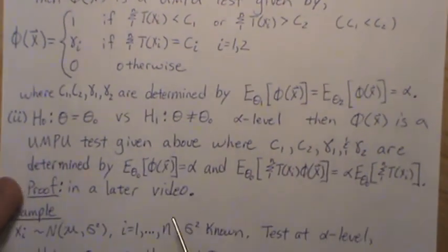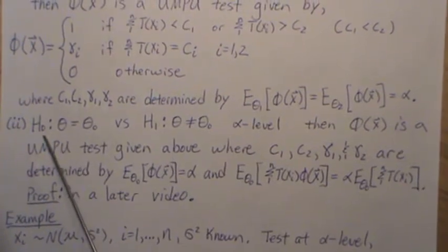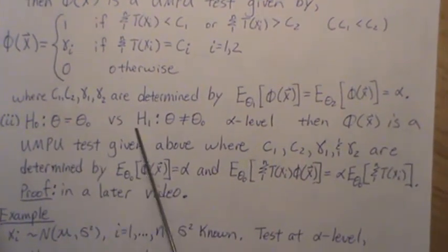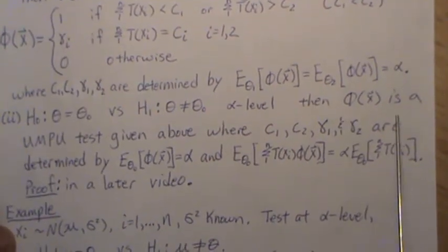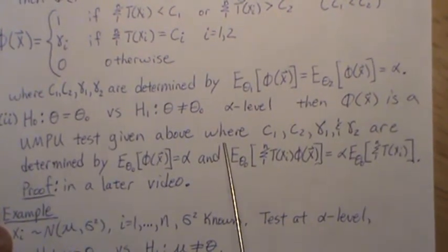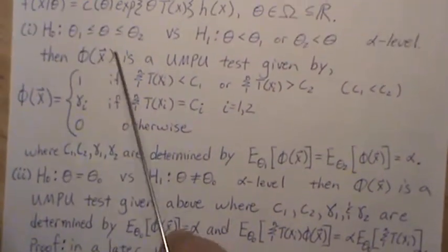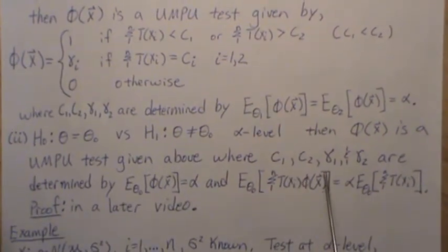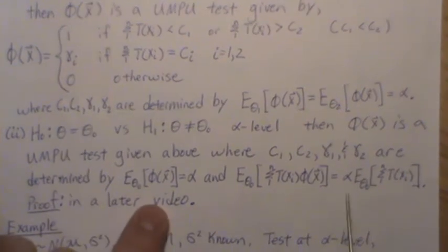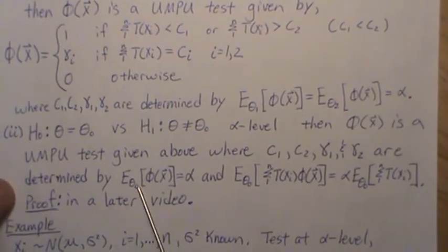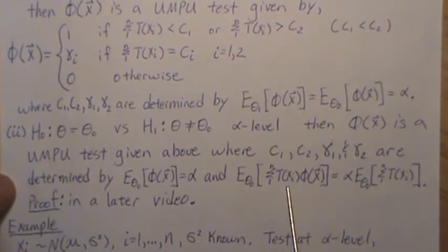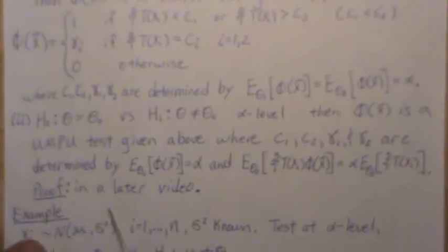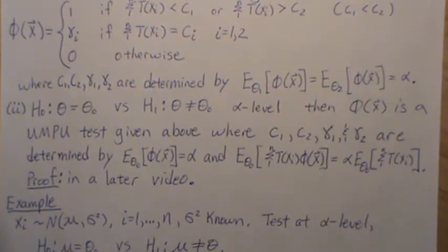The second hypothesis is where the null hypothesis is that θ equals θ₀ versus the alternative that it's not θ₀, at the α level. Then φ is a uniformly most powerful unbiased test given by the same form, where c₁, c₂, γ₁, γ₂ are determined by two equations: the expected value of φ assuming θ₀ is true equals α, and the expected value of the product φ · T(X) equals α times the expected value of T(X). The proof will be in a later video — I'm going to do several examples first.